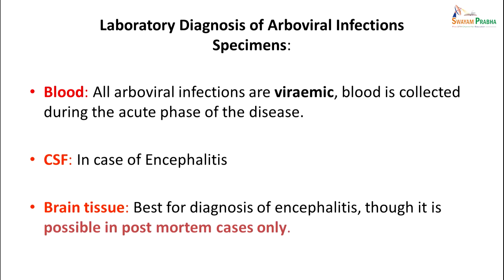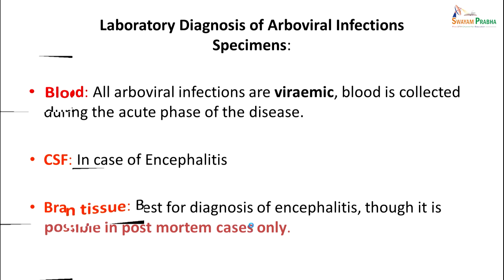As far as lab diagnosis of these arboviral infections is concerned, one needs to collect either a blood sample, CSF, or brain tissue. Blood sample is collected when the patient is viremic — that is, having fever in the acute phase. CSF is collected when a patient is having encephalitis, and brain tissue is usually postmortem only if the patient has not been able to be treated properly.